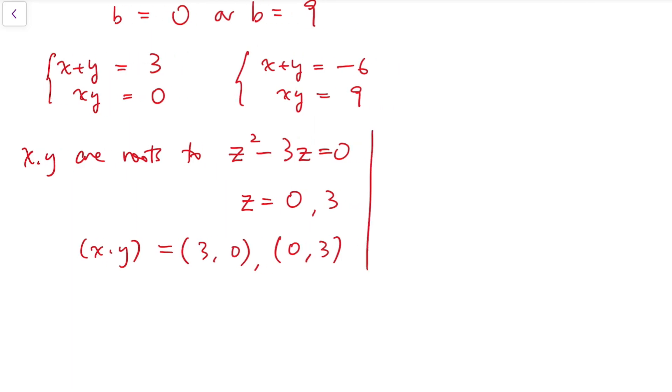Whereas for the other system, I can do the same. But on the equation, z² + 6z + 9 = 0, which gives z = -3 only. So xy has to be both equal to -3.